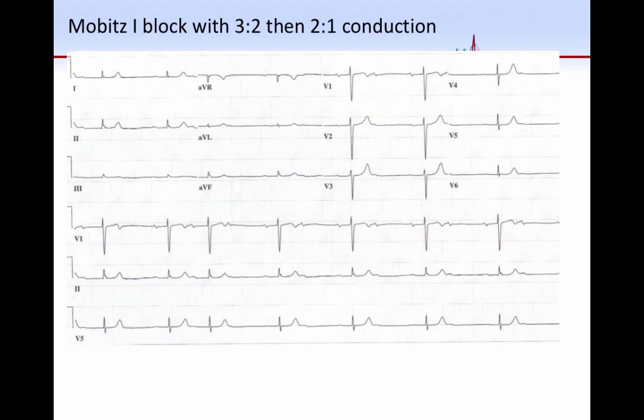Finally, I wanted to show an example of second-degree AV block at the level of the AV node that gives an example of both 3 to 2 conduction as you see this P wave conducts, this one conducts with a longer PR interval, and this one blocks. And then thereafter, you see P waves that conduct with 2 to 1 block. So this is an example of 2 to 1 block with a narrow QRS keeping company with 3 to 2 periodicity. And you know without any question that this is an example of Mobitz I AV block, even though you see 2 to 1 conduction here.